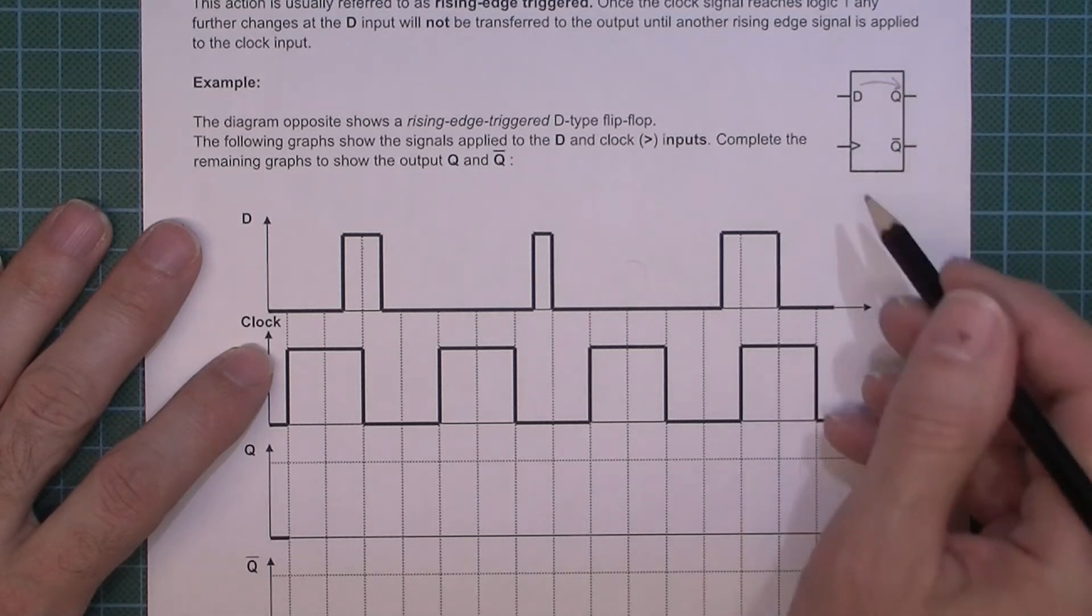Now the thing you have to understand is that transfer of data from D to Q only happens when the clock rises. When I say rises, here's the clock here, so it's at a logic low here and then logic one. So this is a rising edge, this is a rising edge. Hopefully you can see this is a falling edge.